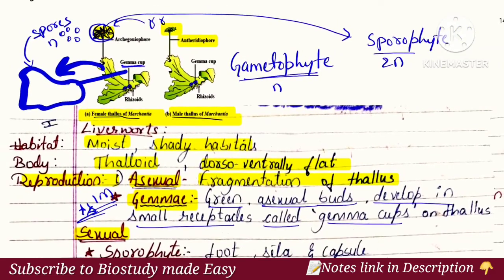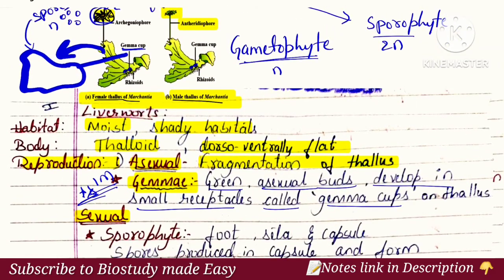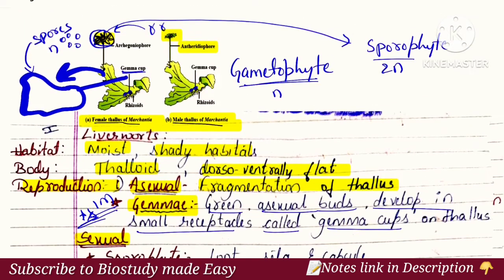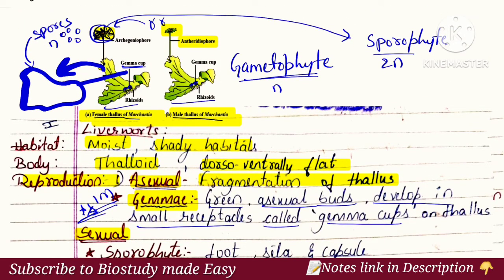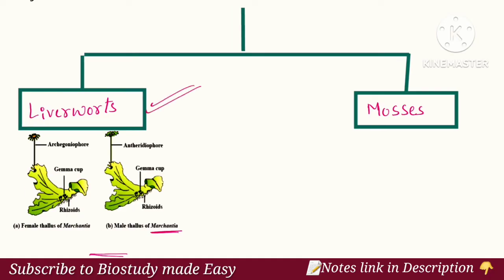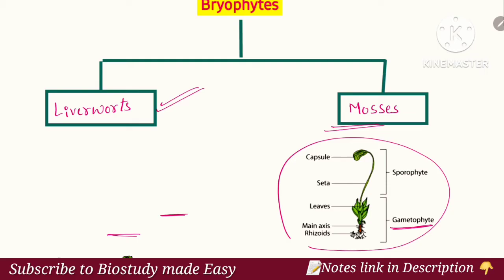This is about liverworts. The liverworts example is Marchantia. You can note the structure of Marchantia here. Next we will study mosses, and the gametophyte and sporophyte stages will be made clear.